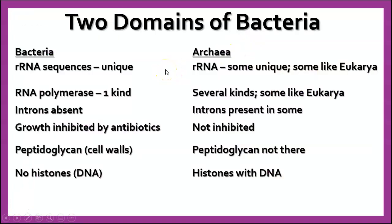There are big differences between the two domains of bacteria. In their ribosomal RNA, the sequences in bacteria are unique — they're only found in bacteria. Whereas in Archaea, some are unique, but many of them are like eukaryote ribosomal RNA. Bacteria have only one kind of RNA polymerase, whereas Archaea has several kinds of RNA polymerase, some of which are like you find in eukaryotes.